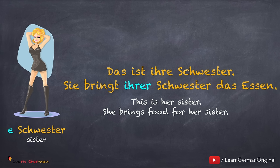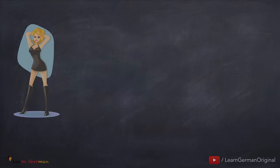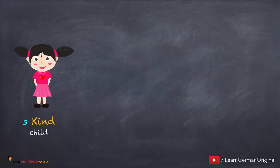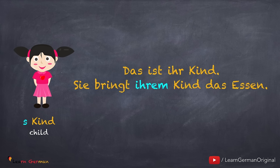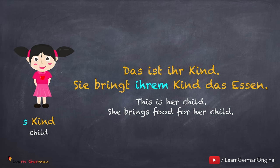Das ist ihre Schwester. Sie bringt ihrer Schwester das Essen. Since 'Schwester' is feminine ('die'), the possessive pronoun for dative would be 'ihrer'. The next one has the article 'das' — I'm sure by now you know what to use. Das ist ihr Kind. Sie bringt ihrem Kind das Essen. Yes, since the article for 'Kind' is 'das', the possessive pronoun would be 'ihrem'.